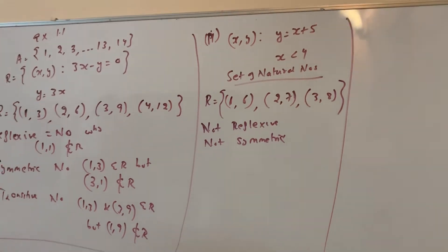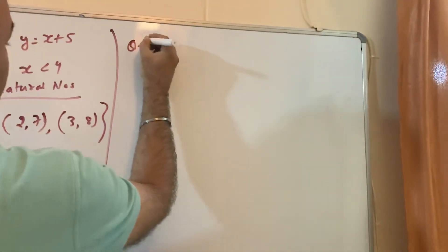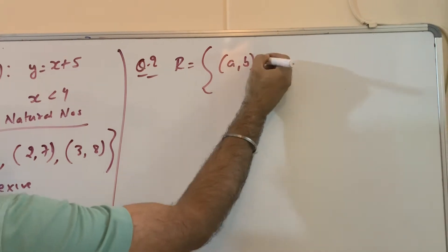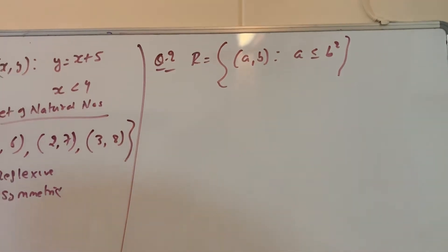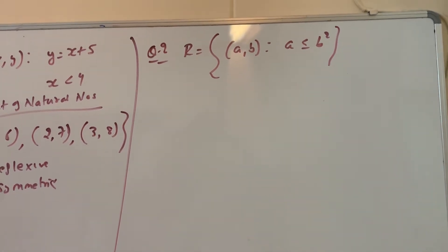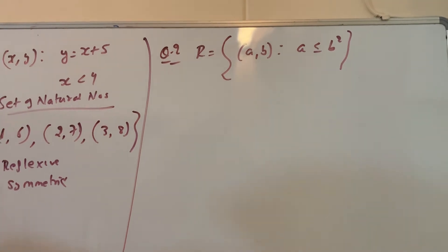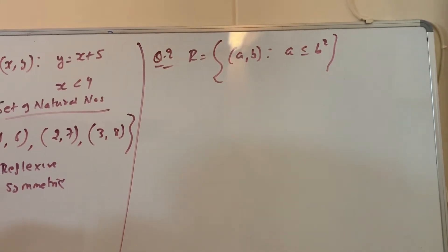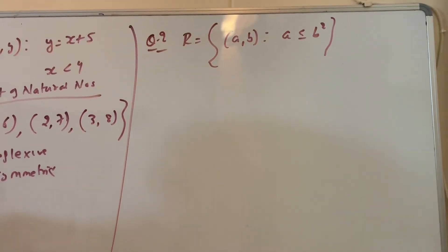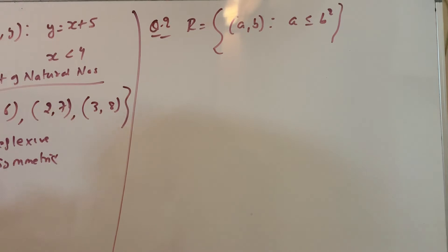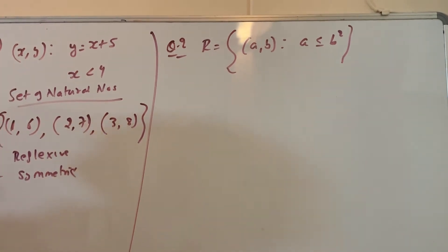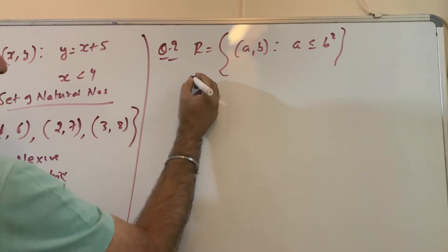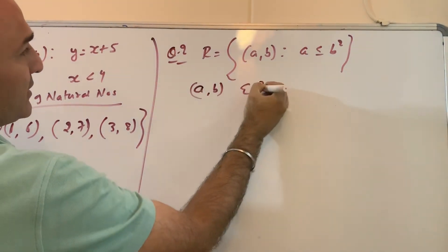Let us see question number 2 of the assignment, where a and b belong to real numbers and the relation is: (a, b) such that a is less than b squared. Now this kind of question — proving is difficult. Remember, to disprove, if the question is for one mark, you have to take examples that show it violates the property. But if you want to prove, prove it generally, as shown in the previous two videos.